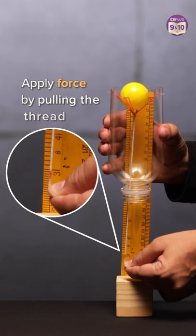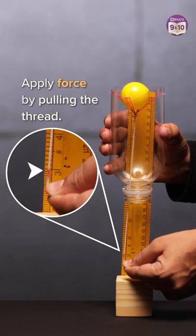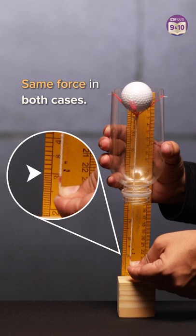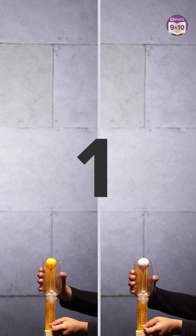Now we are applying force by pulling this thread. Notice the marker at 3. It's the same in both cases, means the force applied is same. 3, 2, 1 and launch.